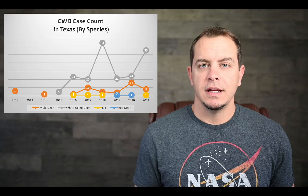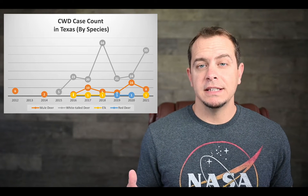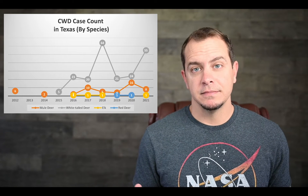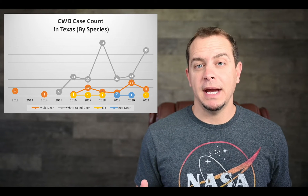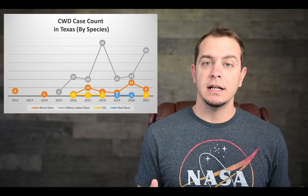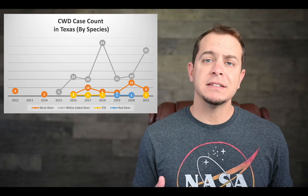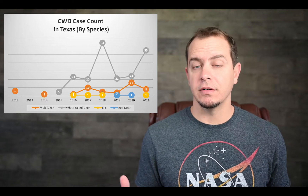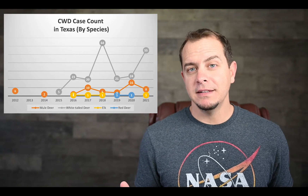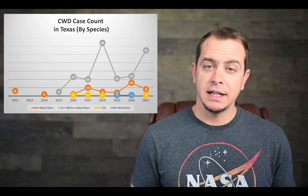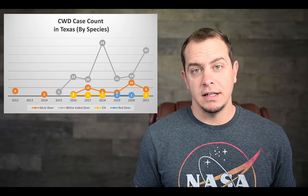Since the first diseased mule deer was found in west Texas back in 2012, Texas has now documented over 270 cases, at least through 2021. The vast majority of species impacted by chronic wasting disease in Texas have been whitetail deer, with about 78% of total cases overall. Other species impacted have included mule deer, elk, and red deer.